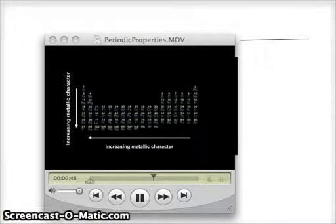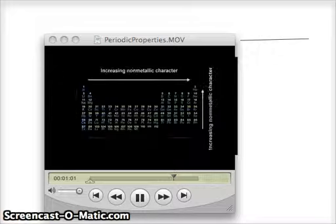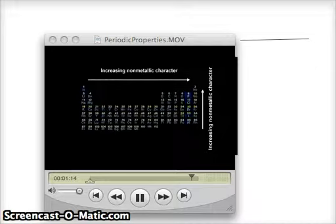The metallic character of the elements increases as we move downward in any given column, and in moving from right to left. The alkali metals of group 1 are the most metallic of any group of elements. Cesium and francium are the most active metals. Non-metallic character increases as we move from left to right in a given row, and as we move upward within a given group. The halogens, group 7, are, as a group, the most non-metallic elements. Fluorine is the most active non-metallic element.